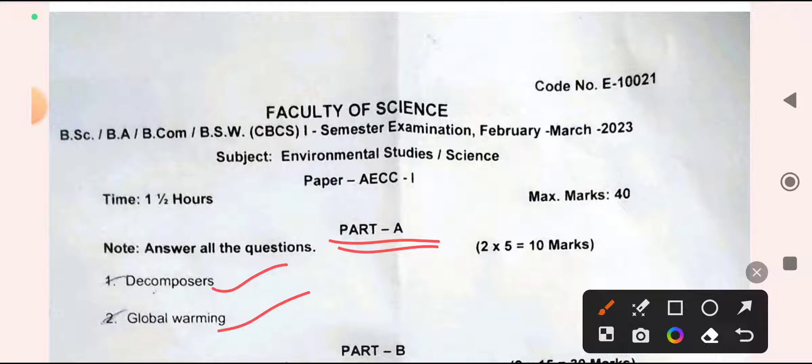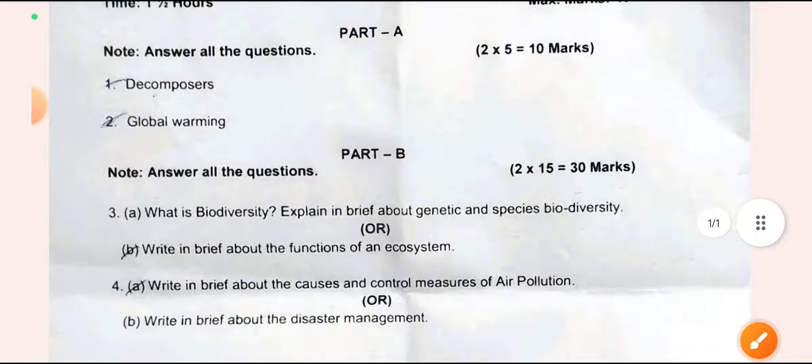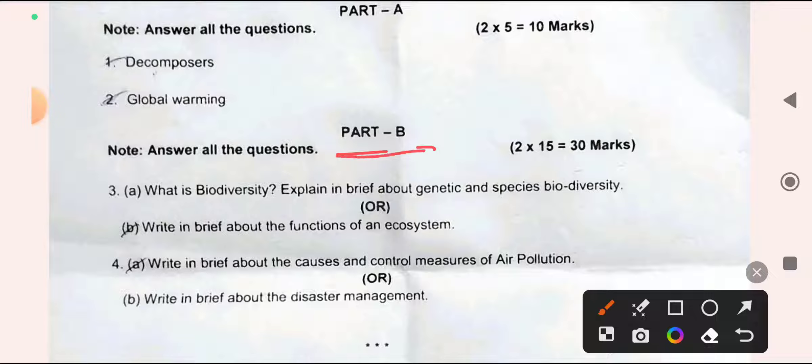In Part B you need to answer all the questions. For example, what is biodiversity? Explain briefly about genetic and species bio-diversity. Write in brief about the functions of an ecosystem. Write in brief about the causes and control measures of air pollution. Write in brief about disaster management.